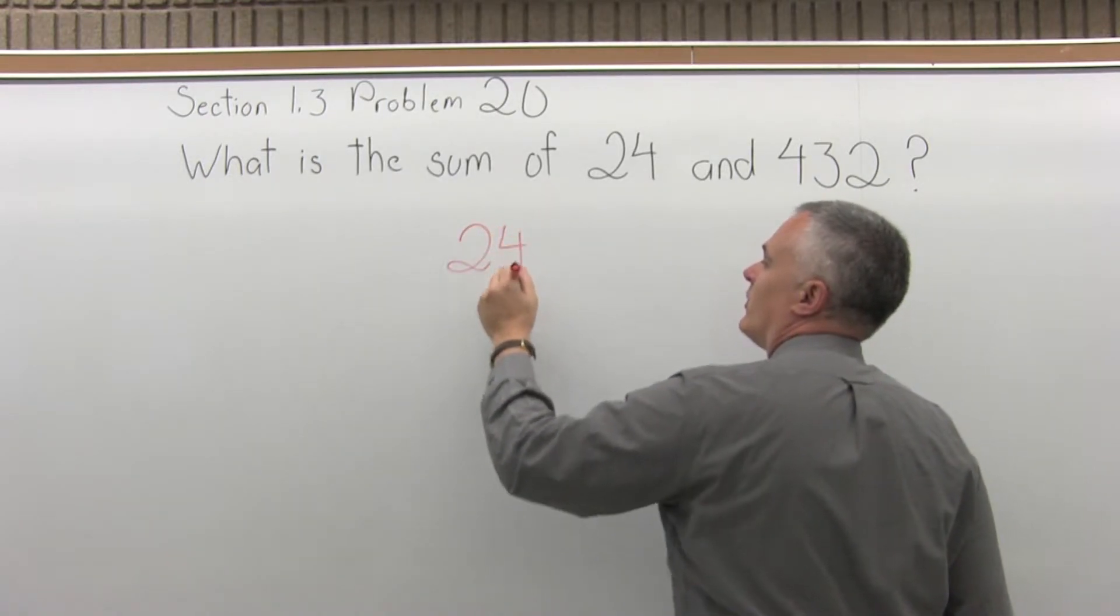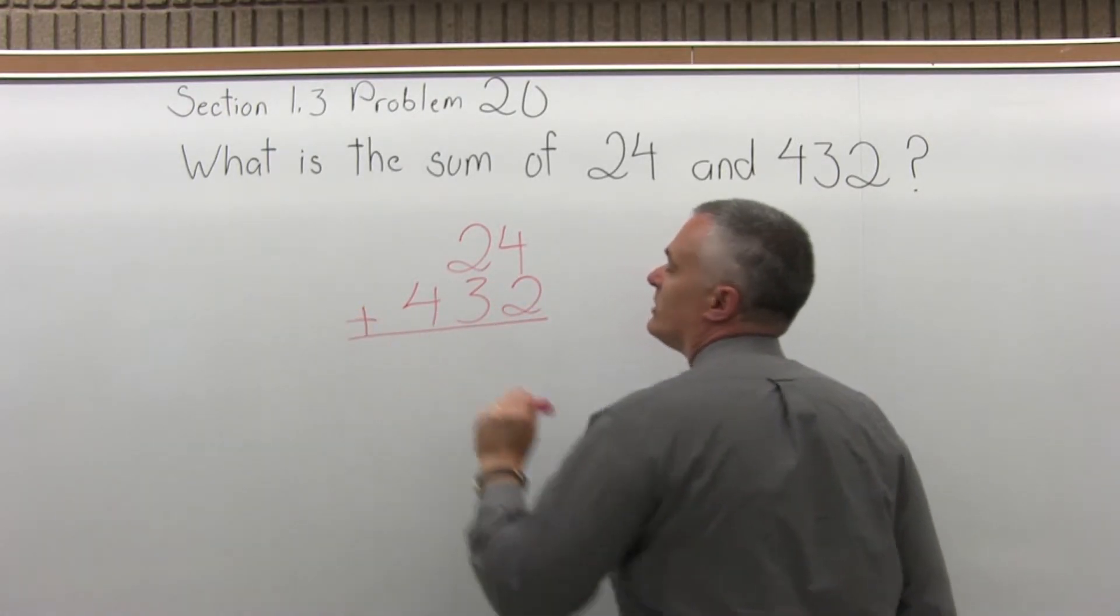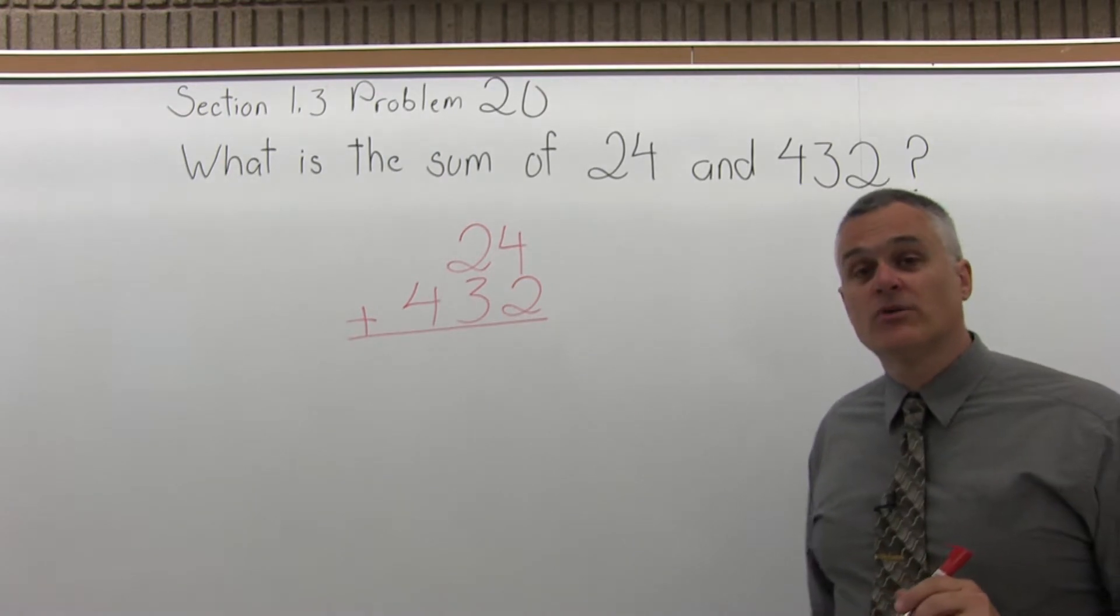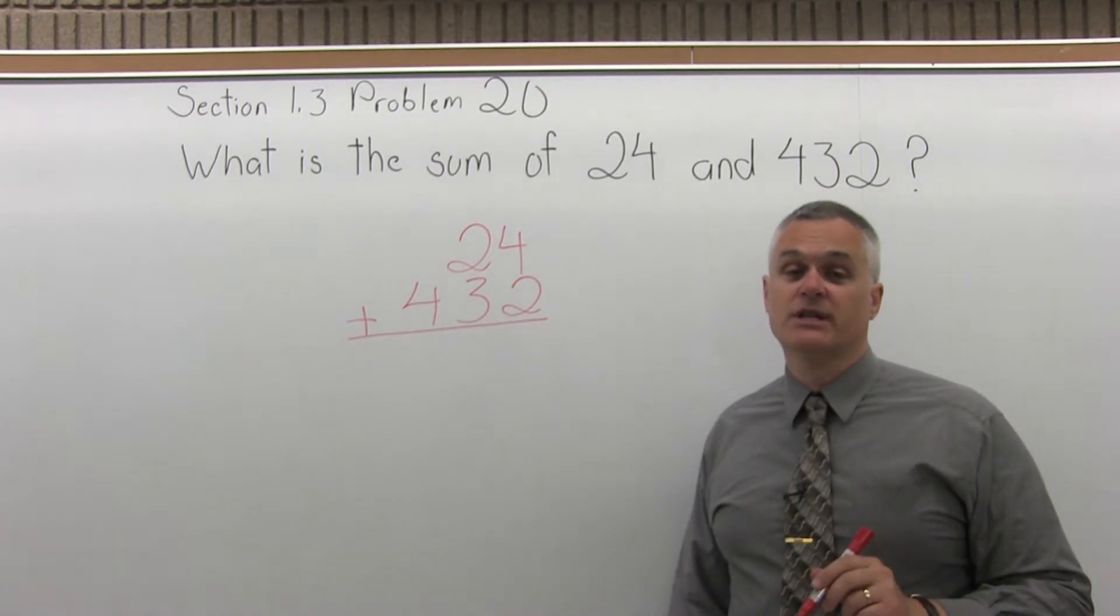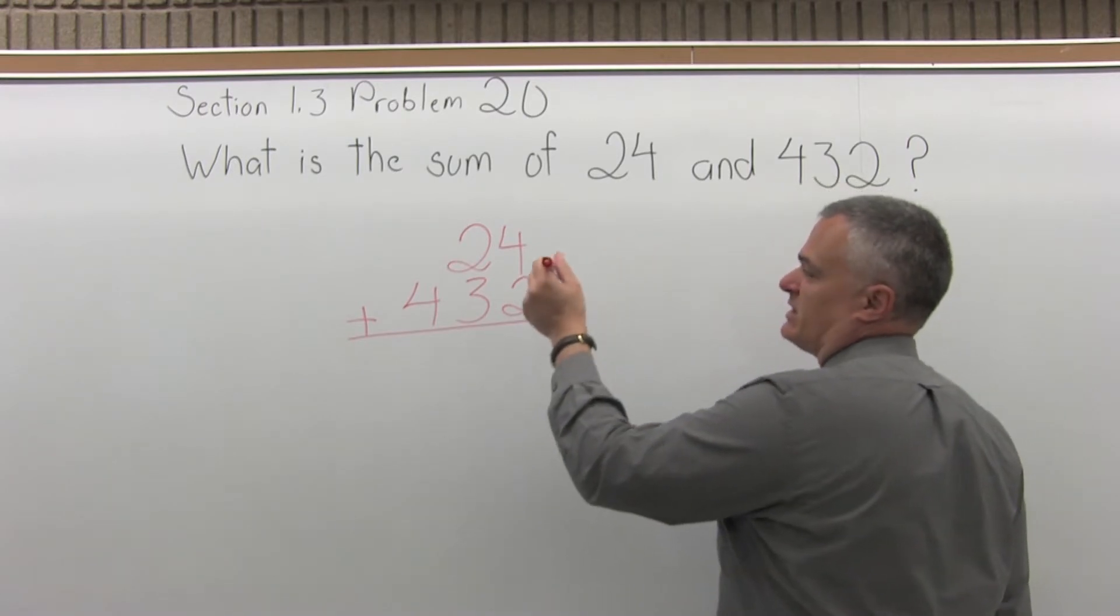So we can just write 24, 432, and add. And we can really add them in either order. We could put the 432 on top and the 24 underneath, and you would still get the same result. I just wrote them in the order they were given in the problem.